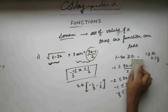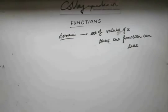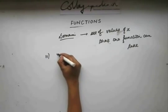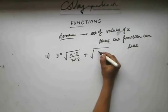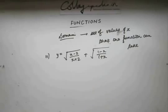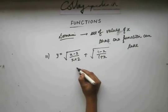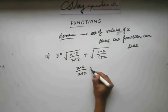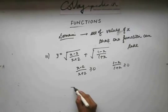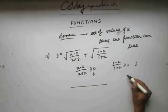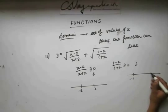Let's take the second problem. The second problem asks us to find the domain of the given function. Again, we have a square root function, and you know that the square root function is defined only for positive values. So this expression should be greater than or equal to zero, and this condition also has to be true. To solve this, we take help of the number line. The roots are minus 2 and 2, and here the roots are minus 1 and 1.